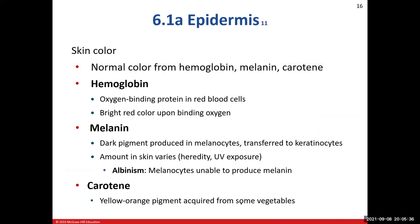Skin color. Some of the things that will influence our skin color are hemoglobin, melanin — which I've talked about — and carotene. Hemoglobin is the protein that carries oxygen in our red blood cells. If hemoglobin is oxygenated, it gives the appearance of red coloring to the blood.